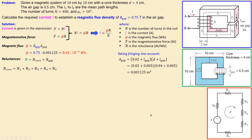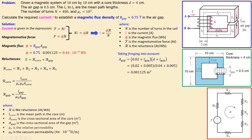The reluctance formula for the core is: R_core = L_core / (μ_r · μ_0 · A_core). For the gap, since relative permeability is 1 in vacuum: R_gap = L_gap / (μ_0 · A_gap). We now identify the values needed: the core area A_core, gap area A_gap, gap length L_gap, relative permeability μ_r = 1000, and μ_0.